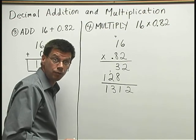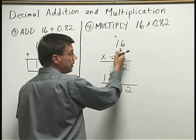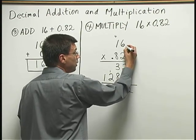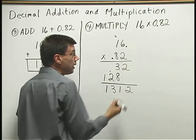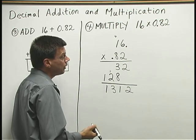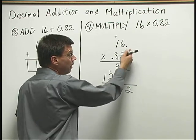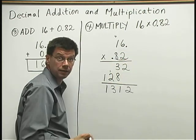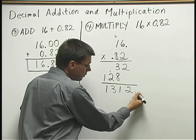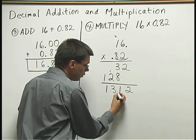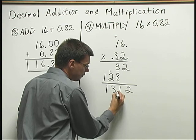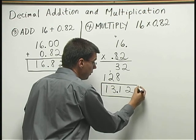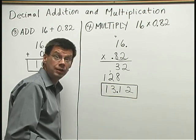Now, I need to decide where to put my decimal point. Since 16 was a whole number, even though we didn't have to write it down, its decimal point was understood to be at the right end of that number. So, when I count the total number of decimal places here, I don't get any from the 16. I get just 2 from the 0.82. So, in my answer, I start at the right and I count over two places. Put the decimal point between the 3 and this 1. And there's my answer for the multiplication. 13.12.